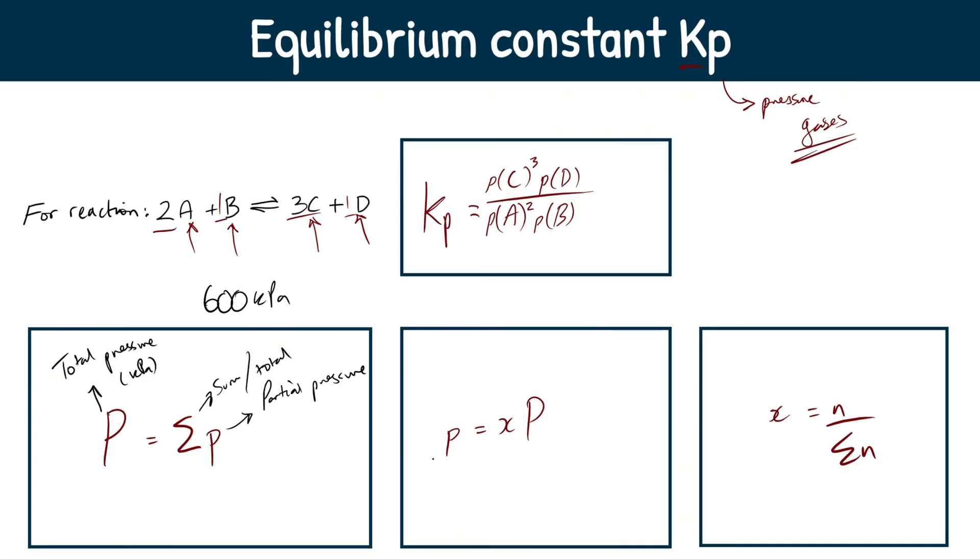Next up, we've got lowercase p, exactly the same thing, it's our partial pressure. Capital P, exactly the same thing, it's our total pressure. This x, this is a new guy here. What's this? This is our mole fraction. There's no units here. I forgot to say the units of partial pressure is also kilopascal, but there's no units here, it's just a fraction. So essentially, total mole fraction equals one.